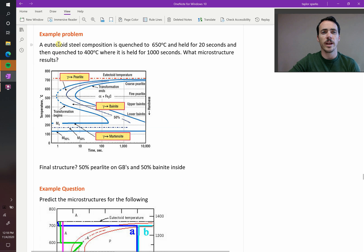So let's assume that we've got a eutectoid steel composition, so we can use this eutectoid TTT diagram, and it says the following: it's quenched at 650 degrees C and then we hold it there for 20 seconds, and then it's quenched to 400 C where it's held for 1,000 seconds. Right now, we're assuming that we can change temperatures instantaneously all the way through your material. That's not actually true, but we're going to assume that for right now.